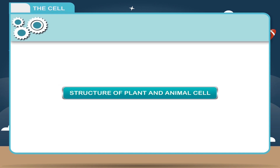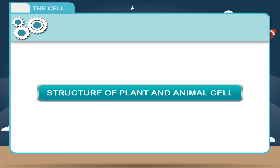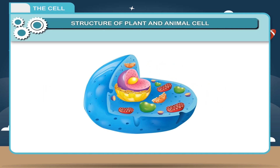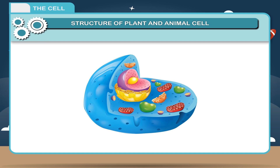Structure of plant and animal cell. The activities of life processes take place in the cells. A typical cell consists of these parts.